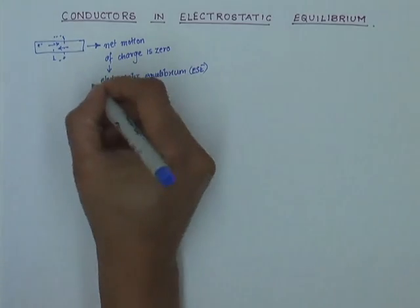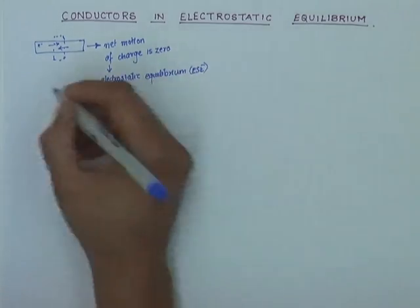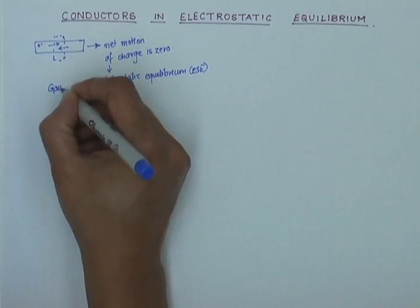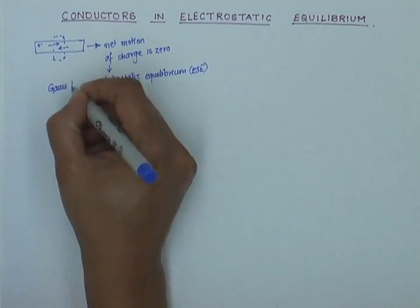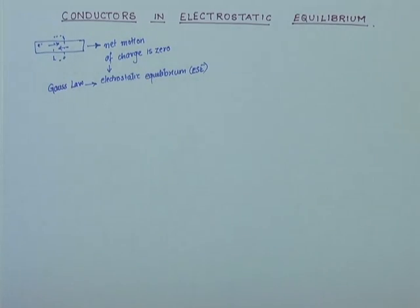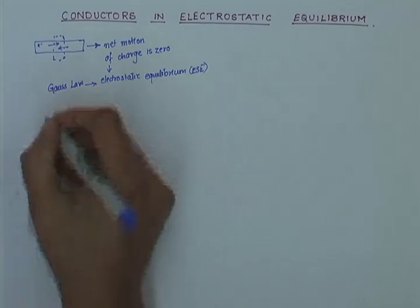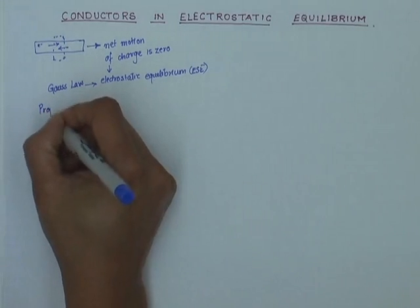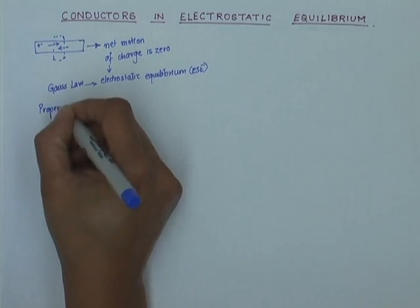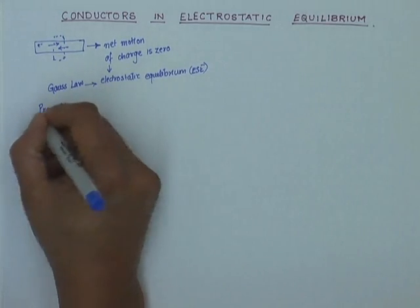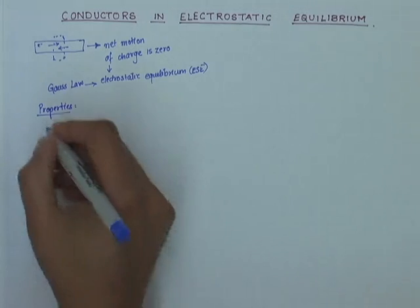Gauss law can be applied to these conductors only when they are in electrostatic equilibrium. When a conductor is in electrostatic equilibrium, there are four more interesting properties that apply, and those properties make applying Gauss law even easier for conductors. Let us see what those properties are — the properties of a conductor in electrostatic equilibrium are as four laws.